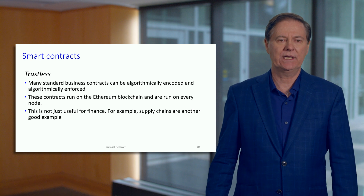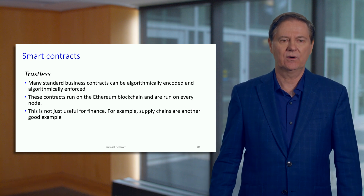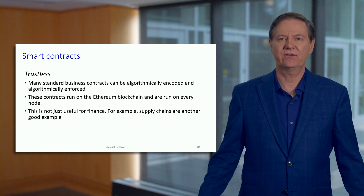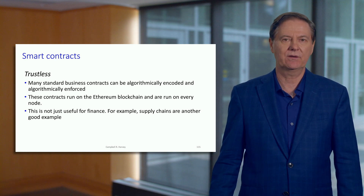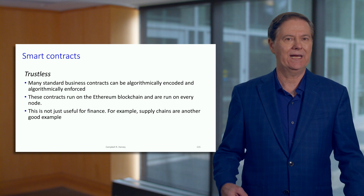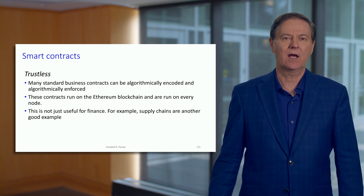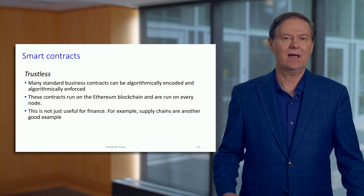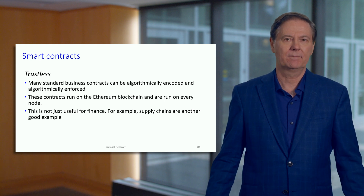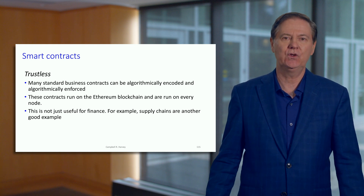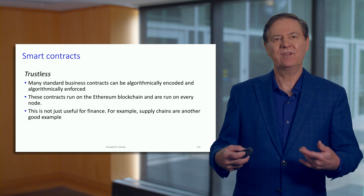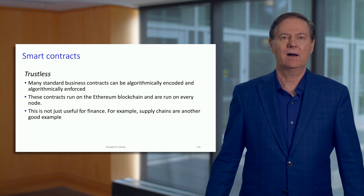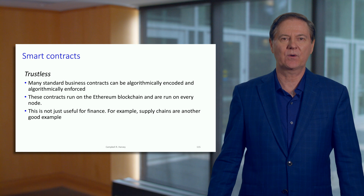Many of the standard contracts that we deal with in business — for example, an option contract for call options or put options — are really easy to algorithmically encode. A smart contract can do that. So for simple contracts, smart contracts are just ideal.